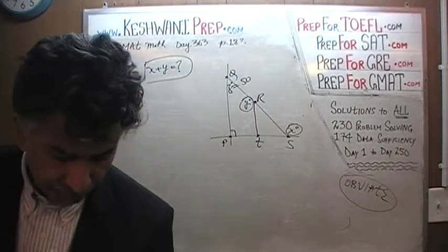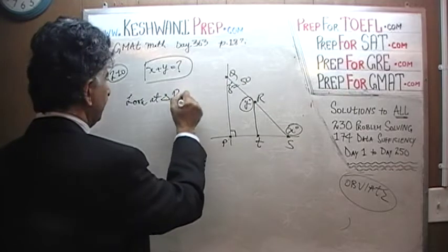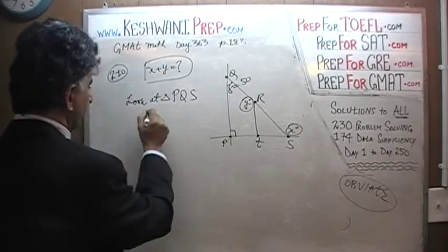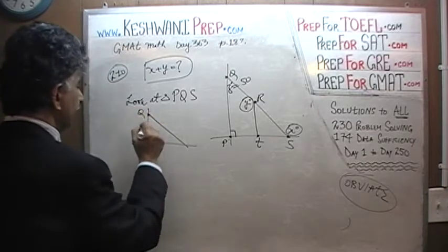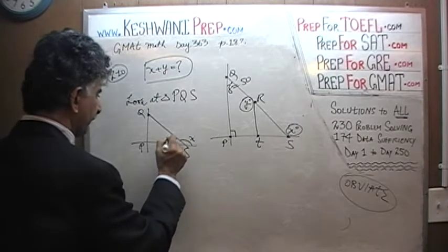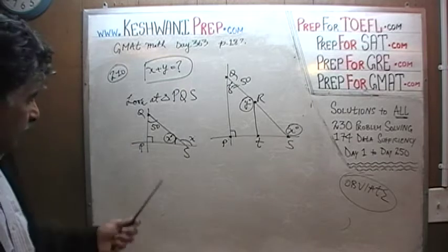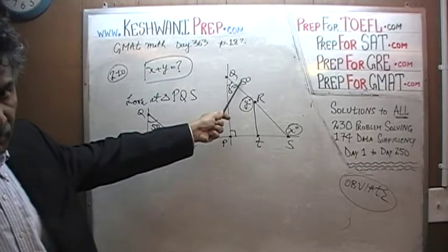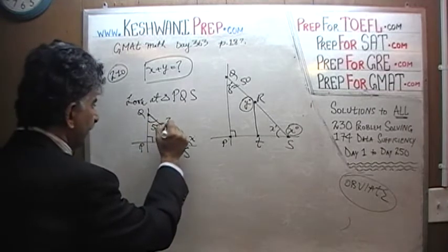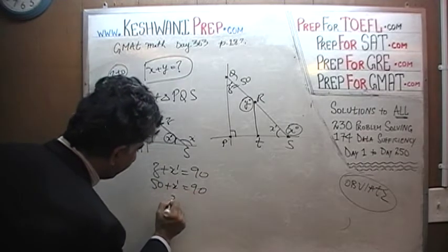Let's begin our process. We are going to look at triangle P, Q, S. Here is P, here is Q, and here is S. This is x — and let's call this inside angle x prime. This we know is 50, and this we know is 90 degrees. Since this is 90 degrees and that's 50, and since they have to add up to 180, z plus x prime have to add up to 90. But z we know is 50, which means x prime must be 40.